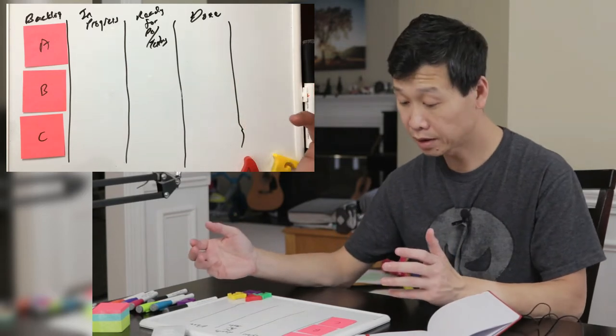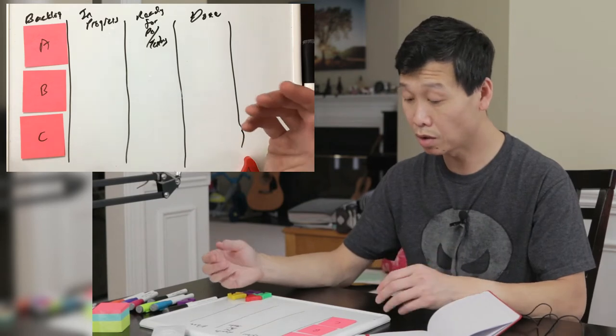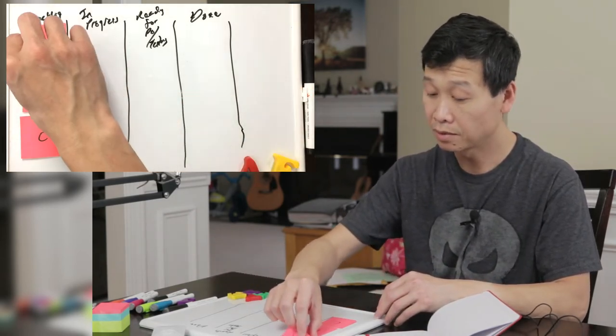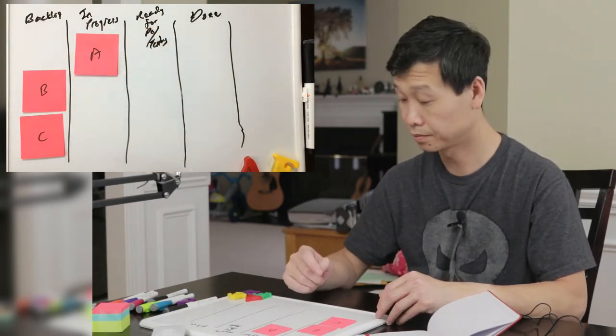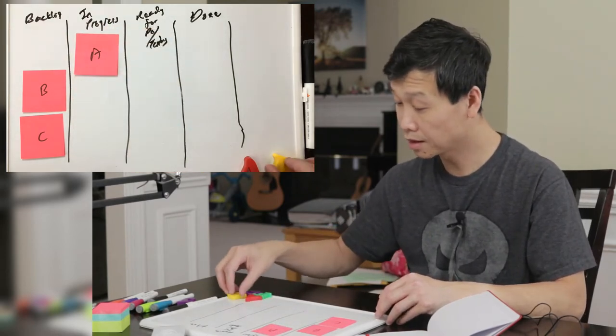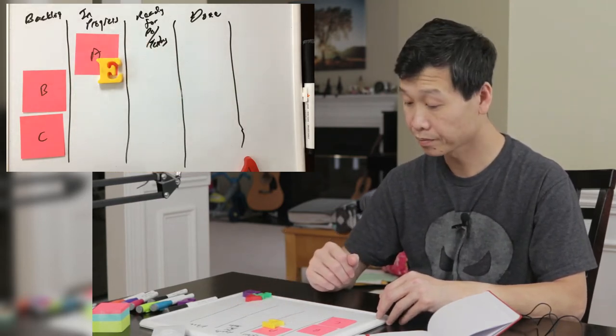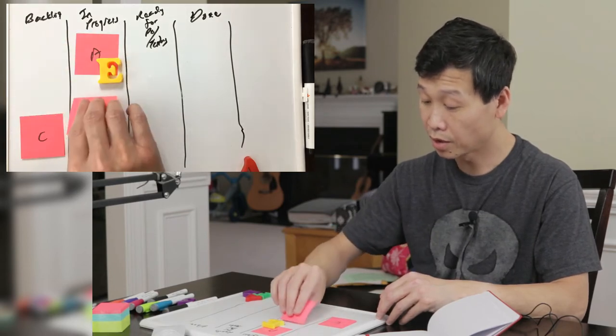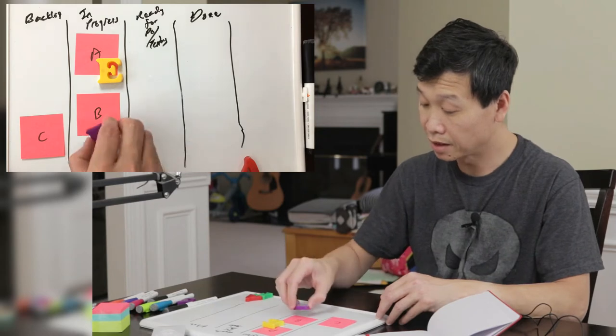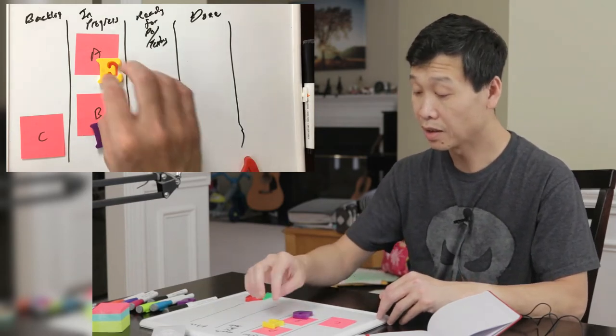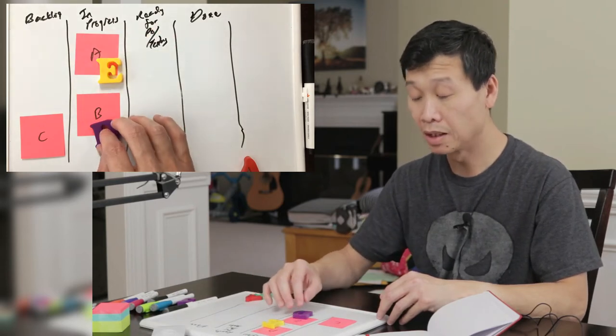Normally how this works is that at the beginning of the sprint, as team members started to work on a specific story, say story A, they will move this to in progress. That's assuming that our developer is E. E works on story A. And story B is worked on by D. We have team member E working on story A, team member D working on story B.